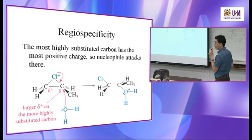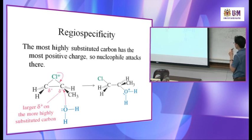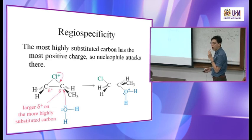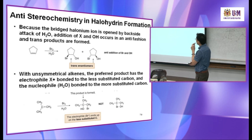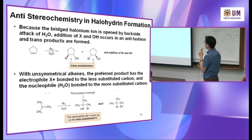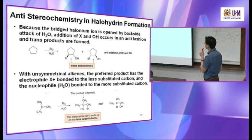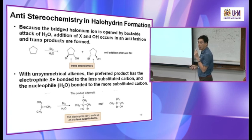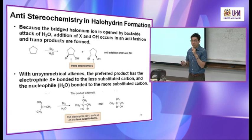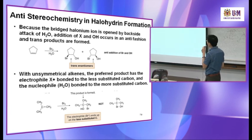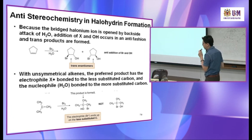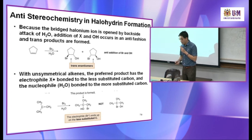After the water attacks, you remove one H to form an OH group — that's the product. If you start with a double bond, you get anti addition, meaning one group up and one down, or vice versa. If bromide is pointing up, the nucleophile attacks from behind. If bromide is pointing in, the nucleophile attacks from the opposite side.